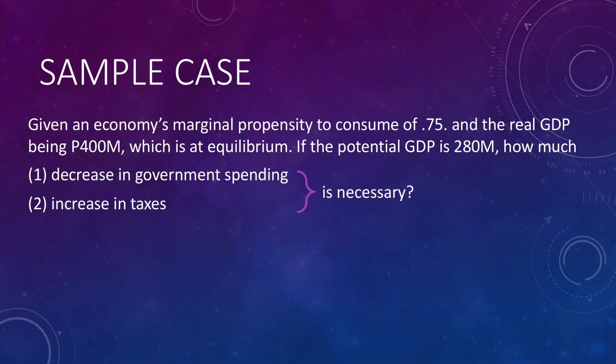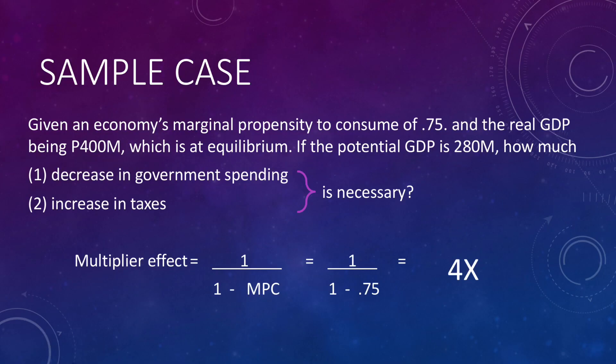Now let us do another scenario where we are experiencing demand-pull inflation. Given an economy's marginal propensity to consume of 0.75 and a real GDP of 400 million, if the potential GDP is 280 million, how much decrease in government spending or increase in taxes is necessary? Note that when real GDP is way above the full employment or potential GDP, this translates to inflation rather than a real increase in productive capacity — so we want to contract the economy. The multiplier is calculated the same way, giving us 4.